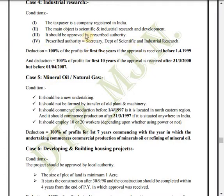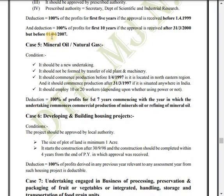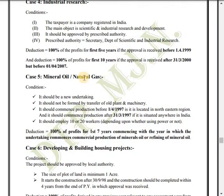The deduction available is 100 percent of profit for the first five years if the approval is received before 1-4-1999, and 100 percent of profit for the first ten years if the approval is received after 31-3-2000 but before 1-4-2007. This was covered in the last video.